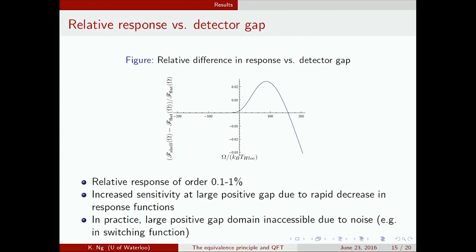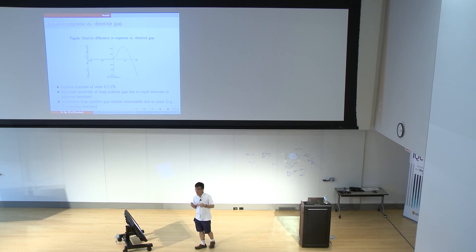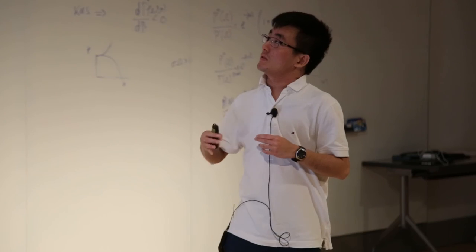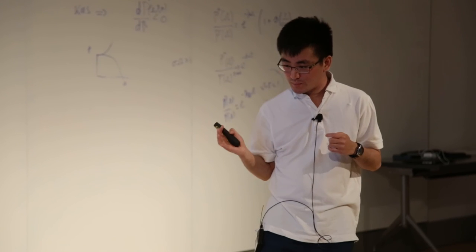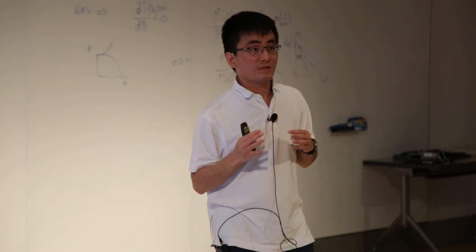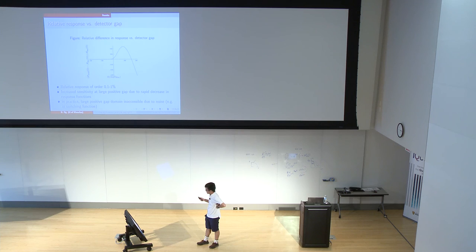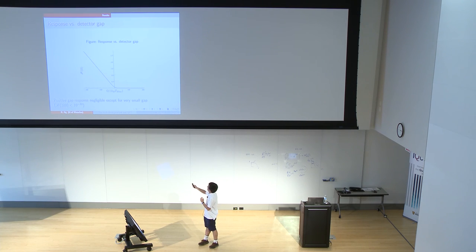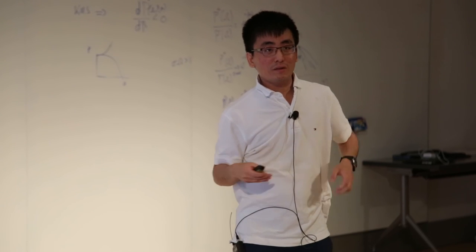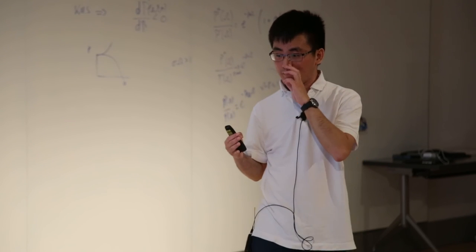But there is a subtle difference in the response between the two space-times. This relative difference is plotted here for shell minus flat over flat. The relative response is of order 0.1 percent at zero gap to 1 percent around here. So we have increased sensitivity at large positive gap due to the decrease in the response function. But in practice this large gap is inaccessible due to noise. It's not very obvious here, but the strength of the response here is 10 to the minus 40. So any experiment that wants to detect this in practice is going to have to be very, very, very sensitive.